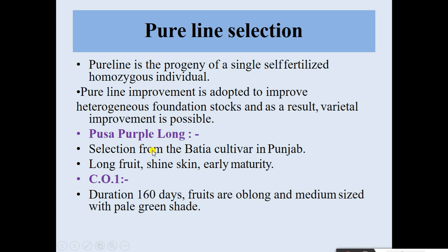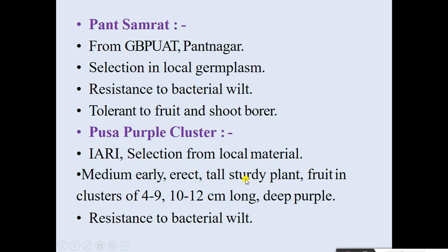Varieties developed using the pure line method in brinjal include: first, Pusa Purple Long — developed from the Bhatia cultivar in Punjab region, with long shiny skin and early maturity; second, CO-1 — duration 160 days, fruits oblong and medium-sized with pale green color; third, Pansamrat — developed from the Pansamrat cultivar; and fourth, Pusa Purple Cluster.